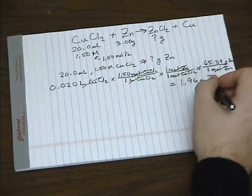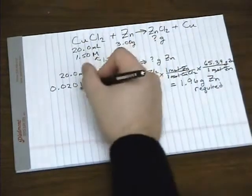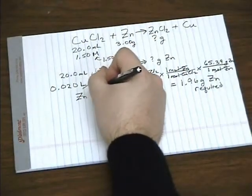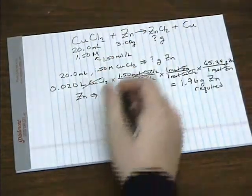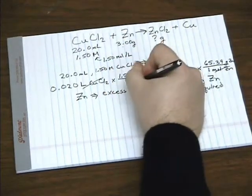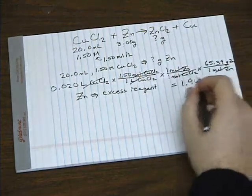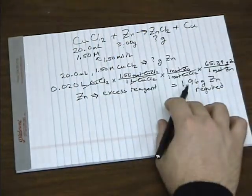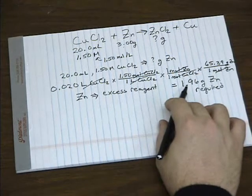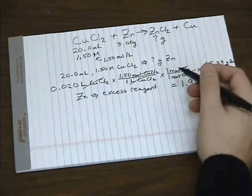So in this case, we see that we actually have more than the amount we calculated. So that means zinc is going to be our excess reagent. We have three, but we only need 1.96 grams. So we're going to have a little bit of a gram left over.